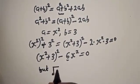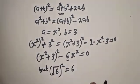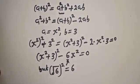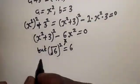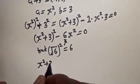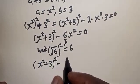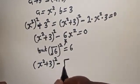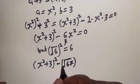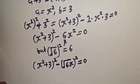Now let's transform the 6. Note that √6 squared is equal to 6, so let's substitute. We have (x² + 3)² minus (√6)² · x² is equal to zero.